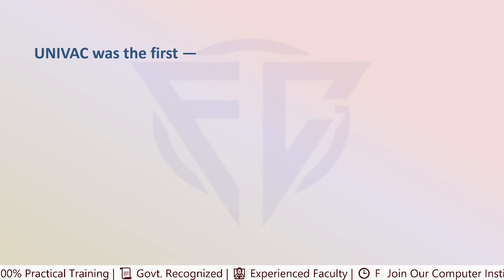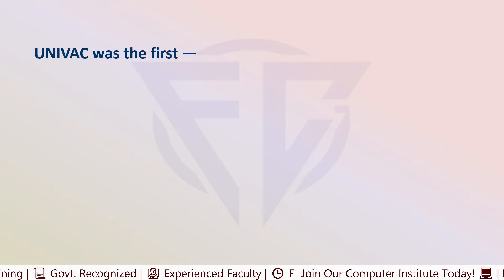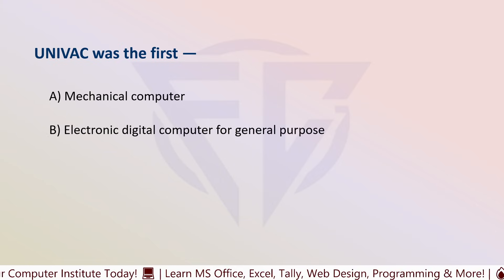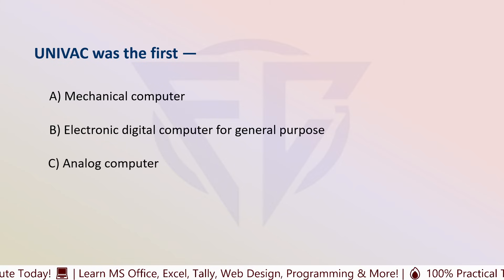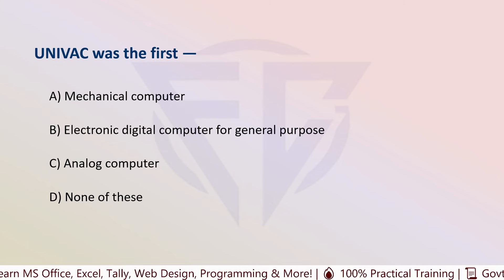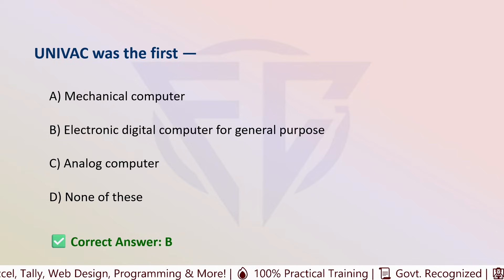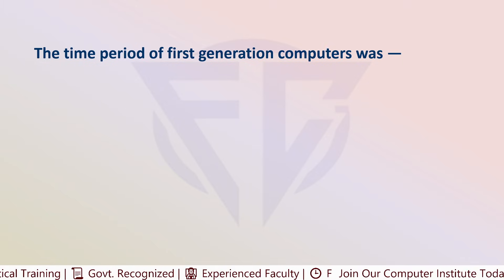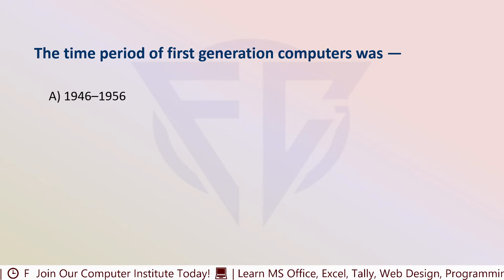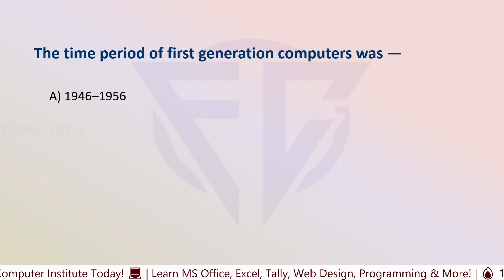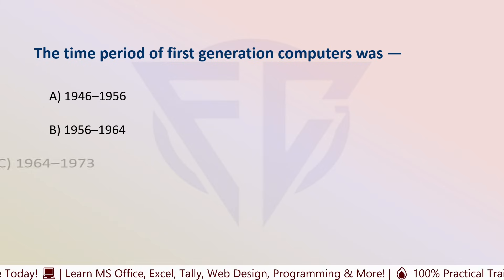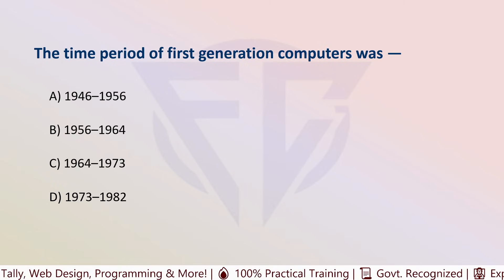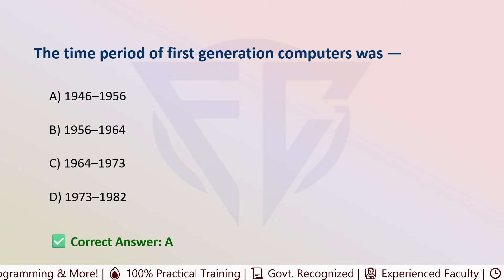The next question is: UNIVAC was the first — options are: A) Mechanical computer, B) Electronic digital computer for general purpose, C) Analog computer, and D) None of these. The correct answer is B, electronic digital computer for general purpose. The next question: the time period of first generation computers was — options are: A) 1946 to 1956, B) 1956 to 1964, C) 1964 to 1973, and D) 1973 to 1982. The correct answer is A, that is 1946 to 1956.